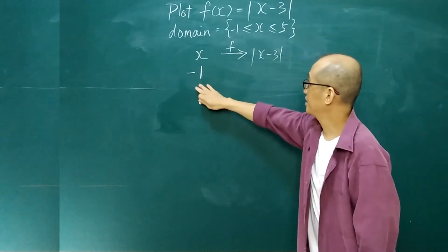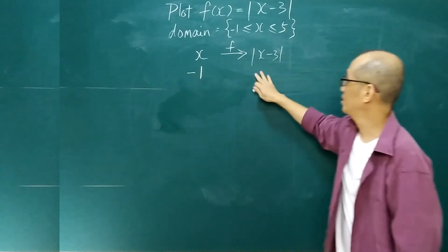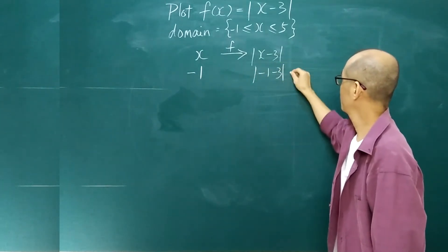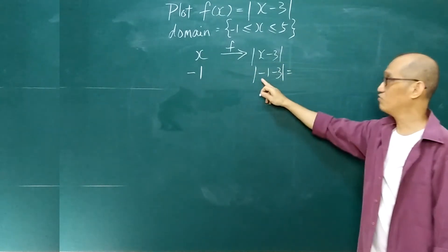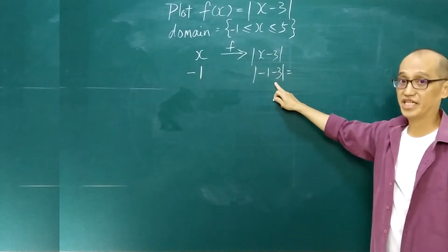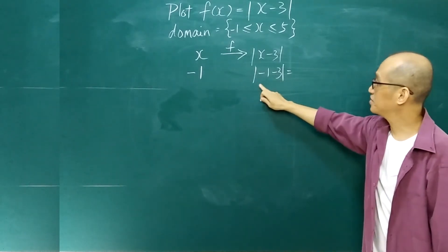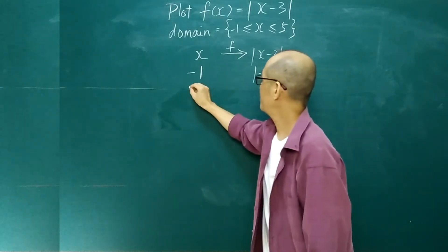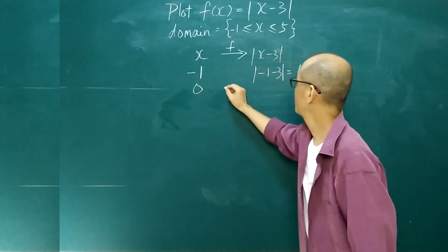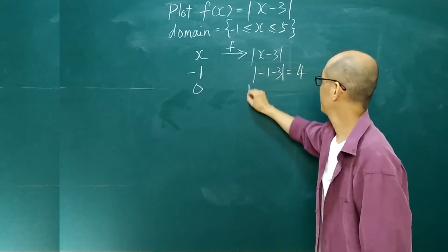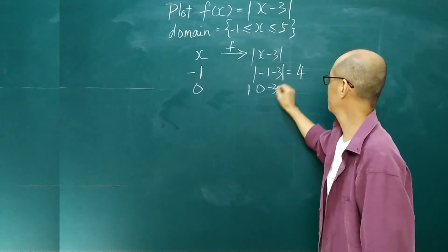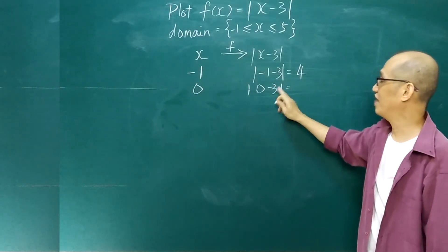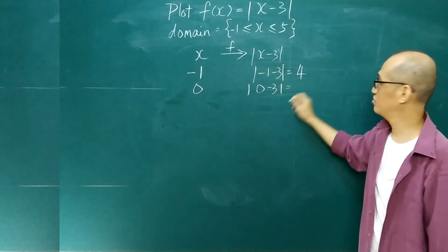When the object is negative 1, the image is the absolute value of negative 1 minus 3. Negative 1 minus 3 is negative 4, and the absolute value of negative 4 is 4. When the object is 0, we get 0 minus 3, which is negative 3, and the absolute value of negative 3 is 3.